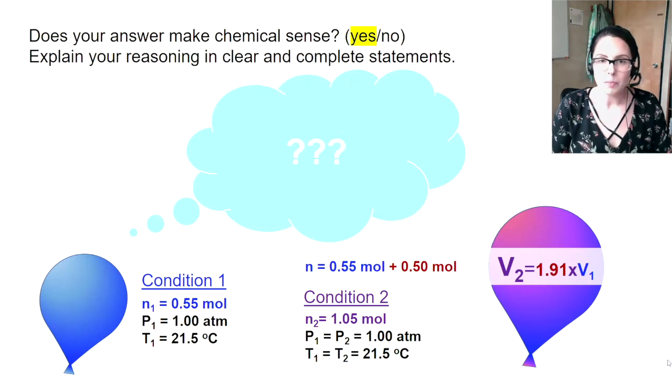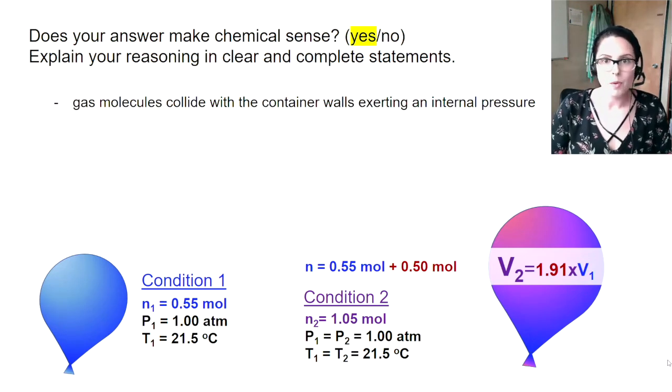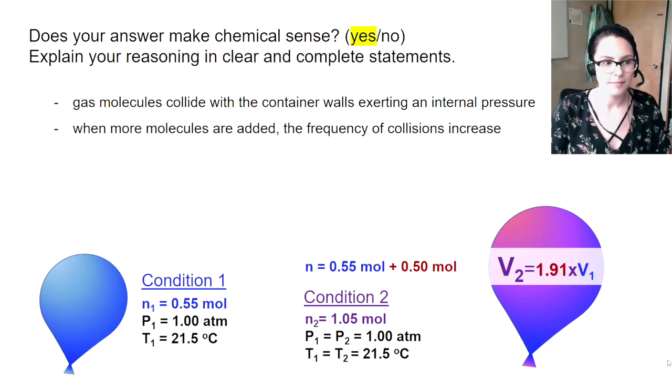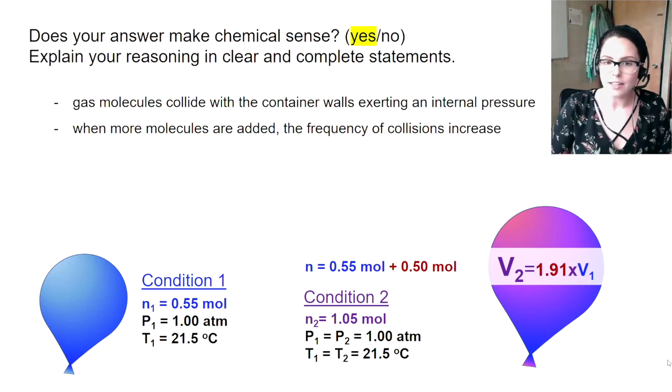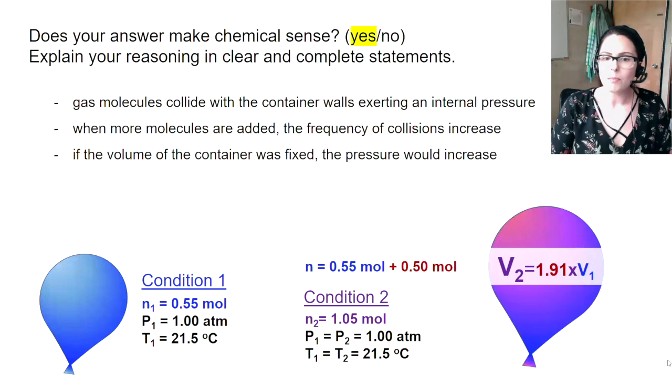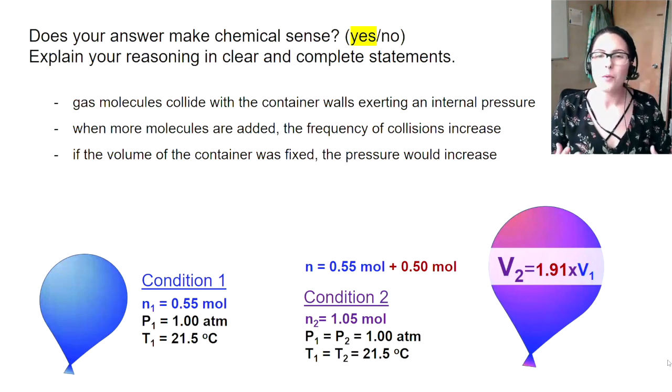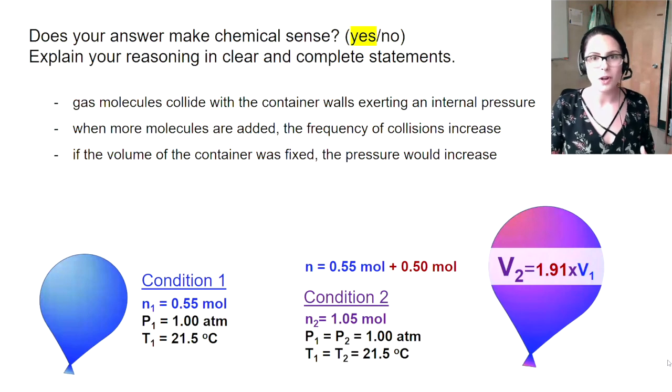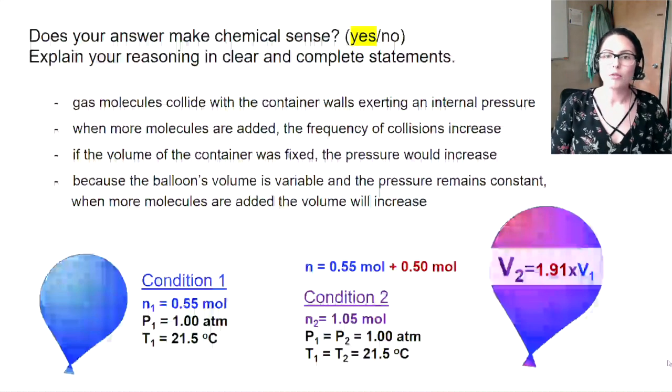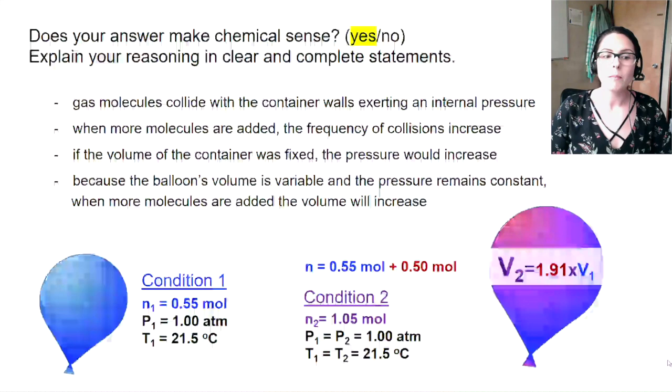Can you explain this reasoning in clear and complete statements? Gas molecules collide with container walls exerting an internal pressure. When more molecules are added to a container, the frequency of collisions increase. If the volume of the container were fixed, the pressure would increase, but we know that the walls of a balloon are flexible. Because our balloon can expand, and the pressure must remain constant, when more molecules are added, the volume will increase.